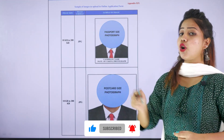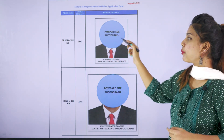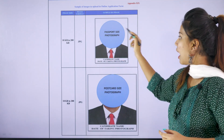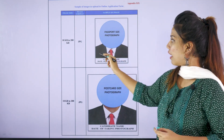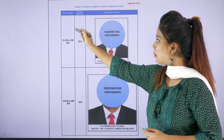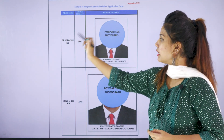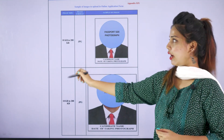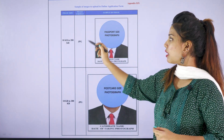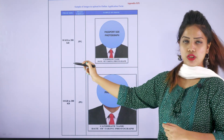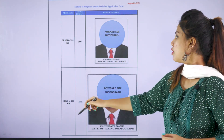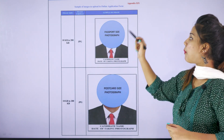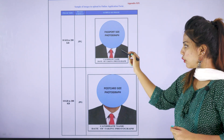The first document you need is your passport size photograph. The image size should be 10 KB to 200 KB, and the image format must be in JPG format.